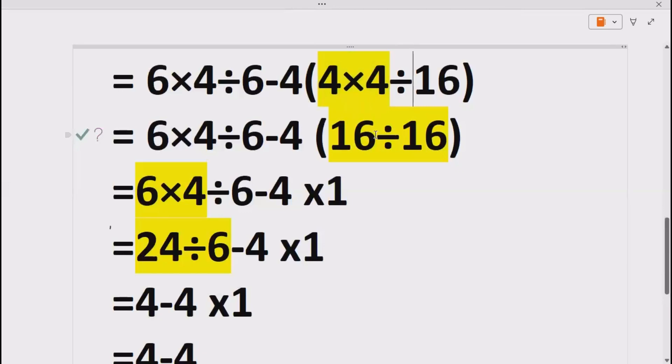Now in other terms we have 6×4 as it is, divided with 6, minus 4 multiplied with the bracket. 16÷16 gives us 1, so now our bracket is completely solved. What we can do is solve other terms. So 6×4 gives us 24.